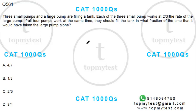Hi, this is a pretty simple question on time and work. Let's see what this says. Three small pumps and a large pump are filling a tank. Each of the three small pumps works at two-thirds the rate of the large pump. All four pumps work at the same time. They should fill the tank in what fraction of the time that it would take the large pump alone?